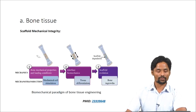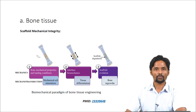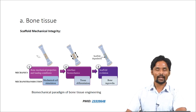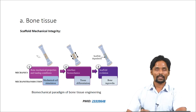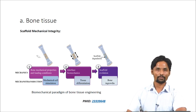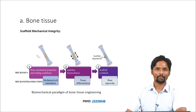Let us begin with the bone tissue. As we know, bone is a hard tissue. Hence, a scaffold fabricated for bone tissue engineering should have high mechanical strength. This is explained in three different steps known as the biomechanical paradigm of bone tissue engineering. The mechanical strength of the scaffold should match our natural bone tissue, and at the same time it should not induce a stress shielding effect, which is prevalent in metallic implants.